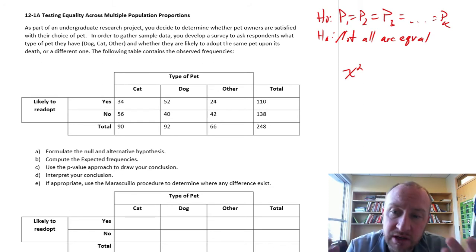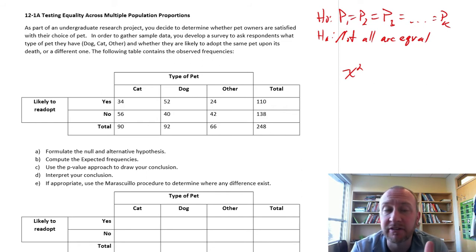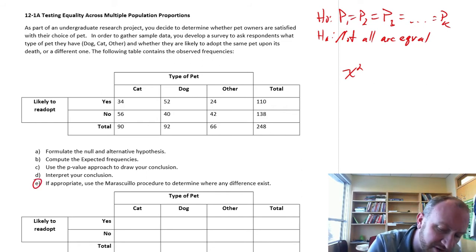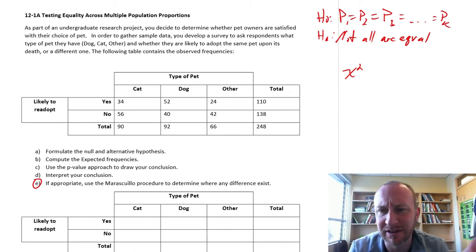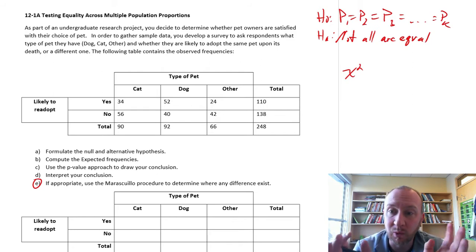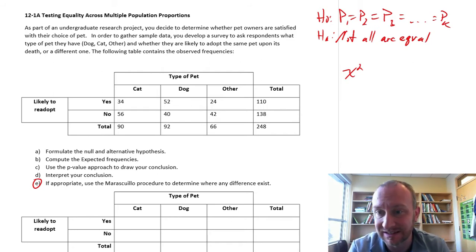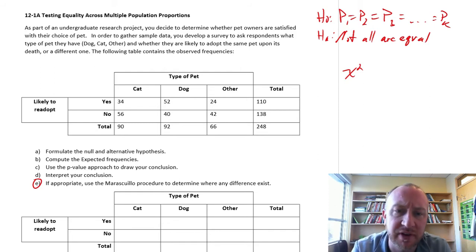So if we do the test and we find that we have evidence to reject the null hypothesis, well then we have this procedure. I always, I don't know how to pronounce the name properly, Marisquilio procedure to identify which of those proportions is different. So we have another set of procedures. I'll probably have to do a second video for that one to identify where a difference exists.